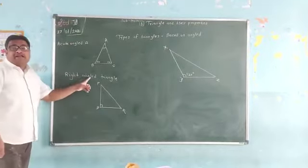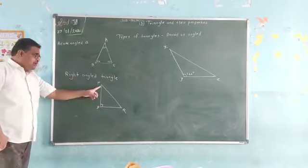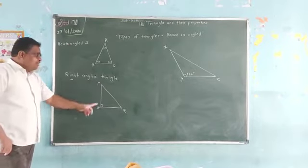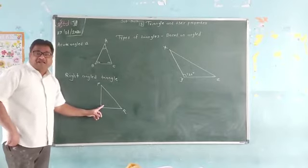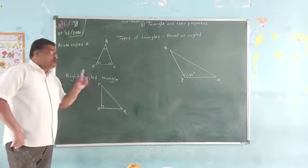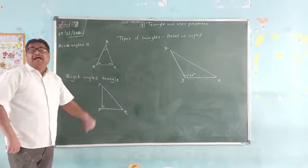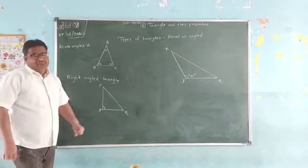Now, second, right angle triangle. In this triangle PQR, angle Q is 90 degrees. That's why it is called a right angle triangle.